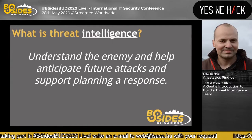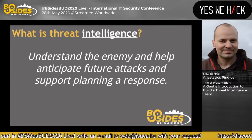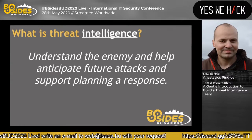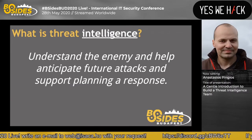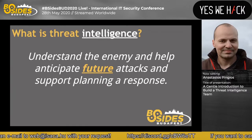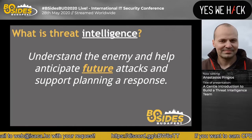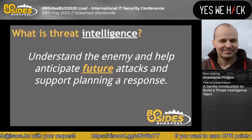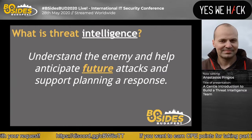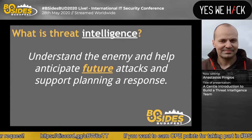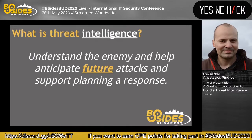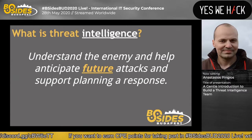Now to the second part — intelligence. An easy definition: to understand the enemy and help anticipate future attacks and support planning for a response. This is the goal of what intelligence should be doing — driving proactive controls. The key part in this definition is the future. What you are after in threat intelligence is defining what will happen in the future if no actions are taken. Whether it's a threat actor starting to use new malware or a new phishing kit that bypasses your sandbox, the concept of intelligence is that you are looking at the proactive side of security.